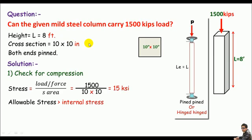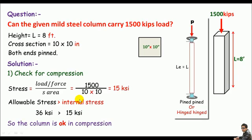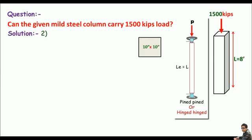Let's assume the mild steel is A36, so allowable stress will be 36 ksi, and the internal stress is only 15 ksi. So 36 ksi is greater than 15 ksi, so we can say without any doubt the column is okay in compression.